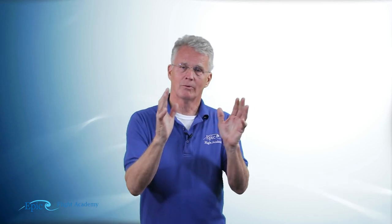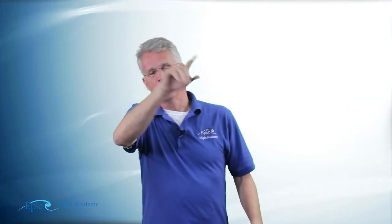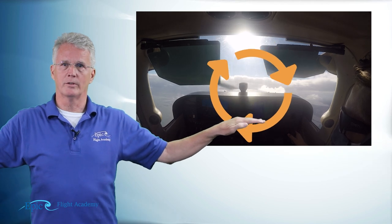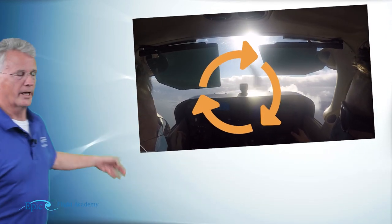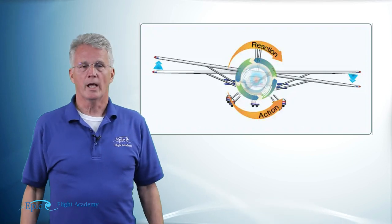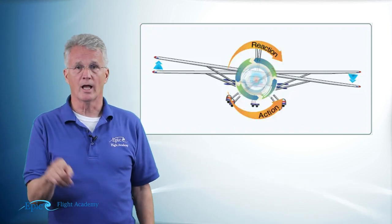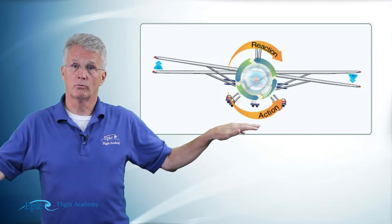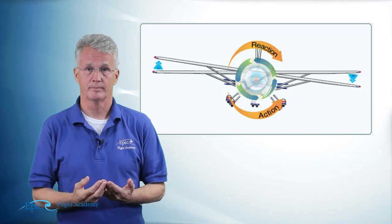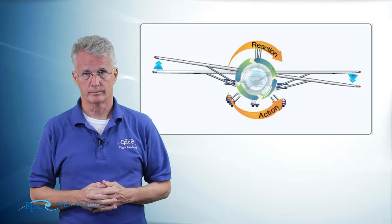The aircraft that the engine is mounted to is going to want to have an equal and opposite reaction. So if the propeller is rotating clockwise from my view as a pilot, the aircraft is going to want to rotate counterclockwise — that's what we're depicting in this diagram. The engine is moving very fast and is relatively light; the aircraft itself rolls slowly because it is comparatively heavy. That's torque.